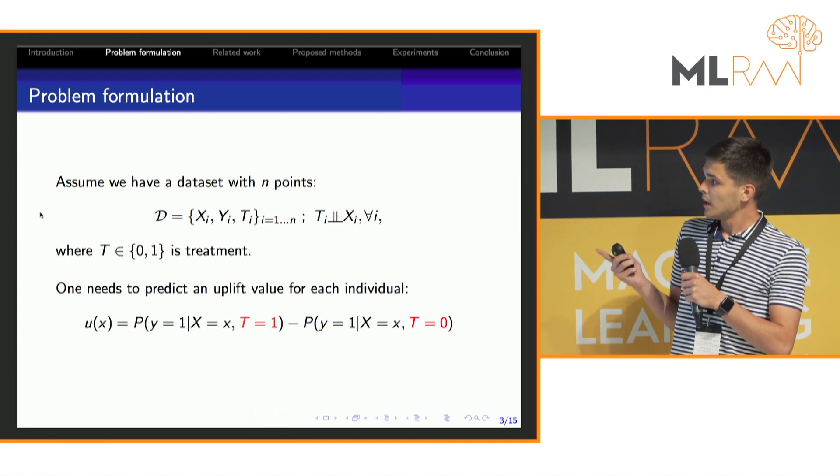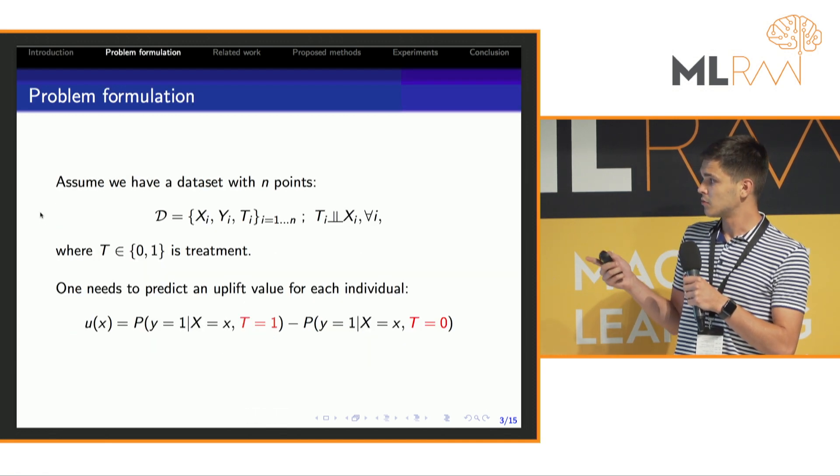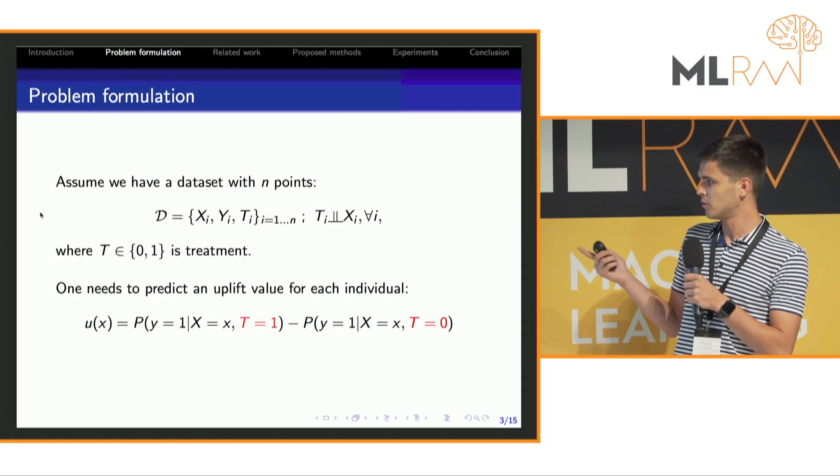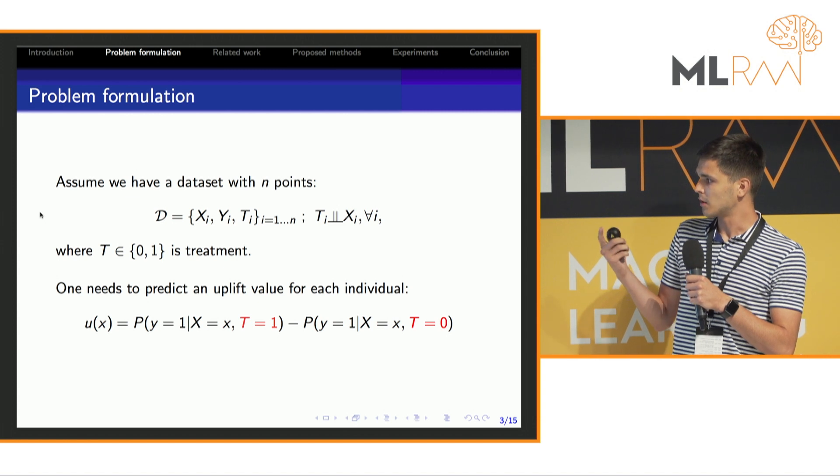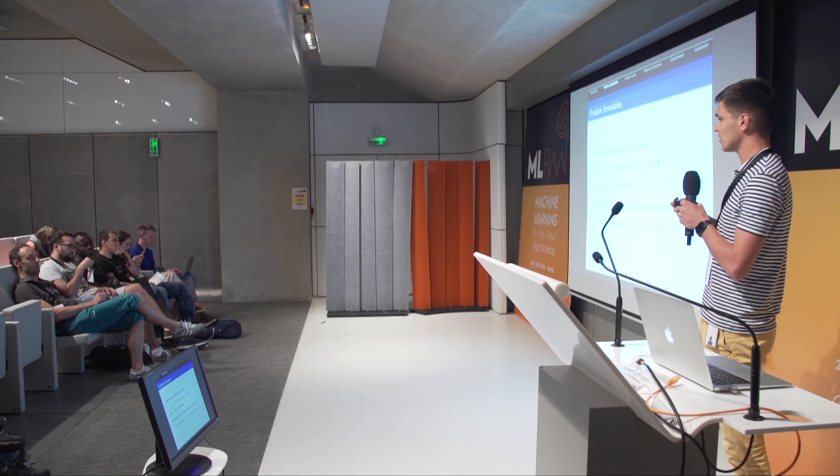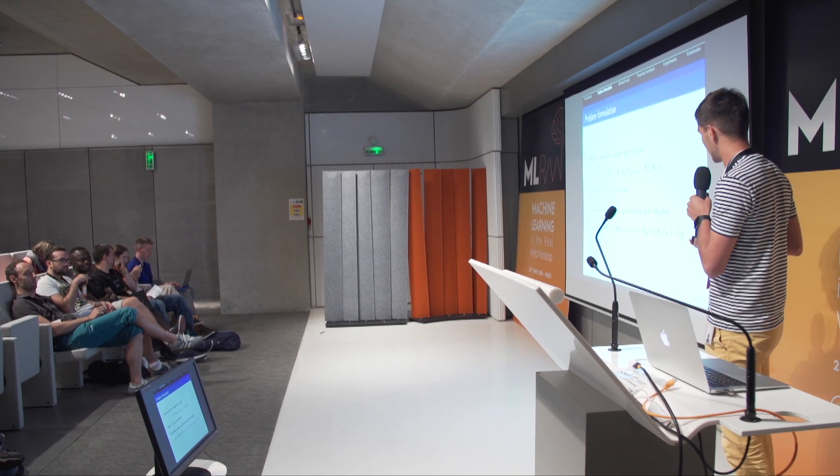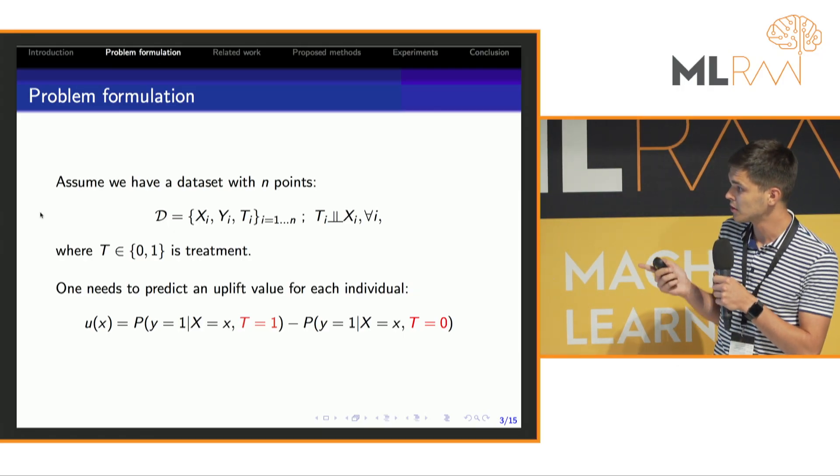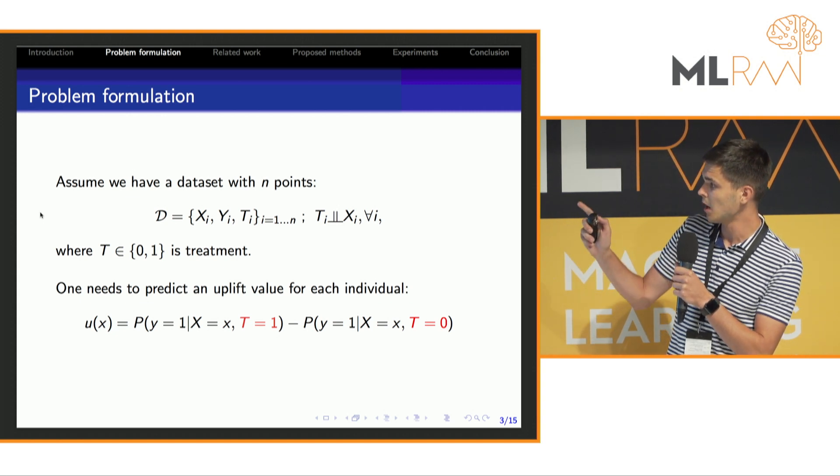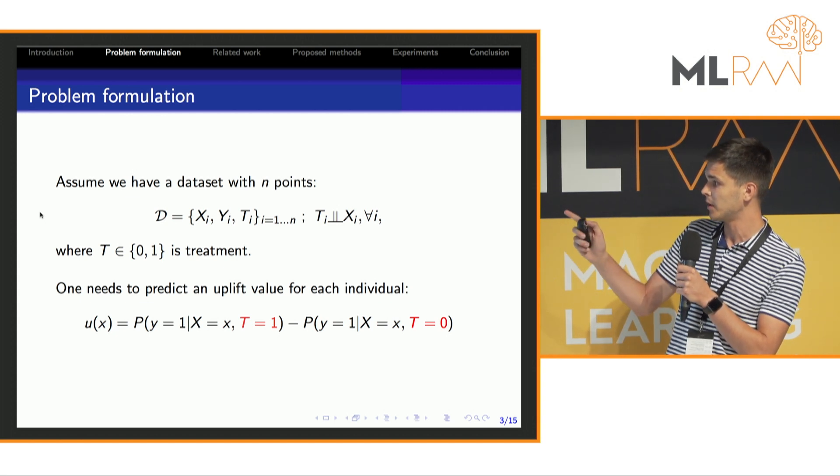In our case, in addition to basic features and answers, we also have an extra column of treatment. Therefore all customers in our dataset can be divided into groups treatment T and control C. Another assumption here is that our features must be independent of treatment.